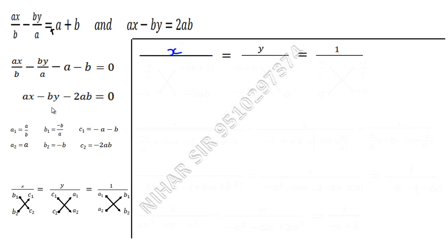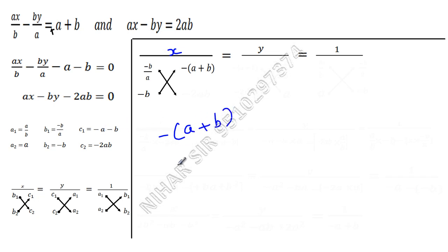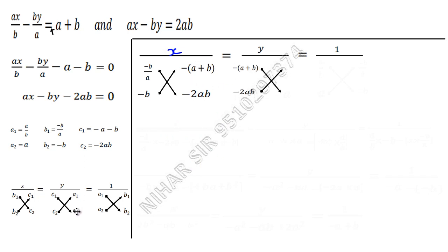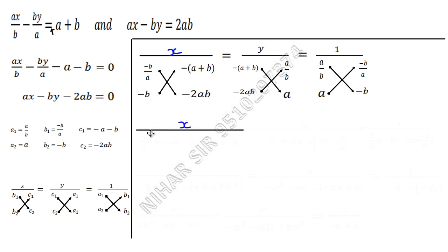Now let us substitute the values. The numerators are x, y, and 1. The value of b1 is minus b/a, b2 is minus b. The value of c1 is minus a minus b, which is the same as minus into bracket (a plus b). The value of c2 is minus 2ab. Then a1 is a/b, a2 is a, and b1, b2 are repeated at the end.